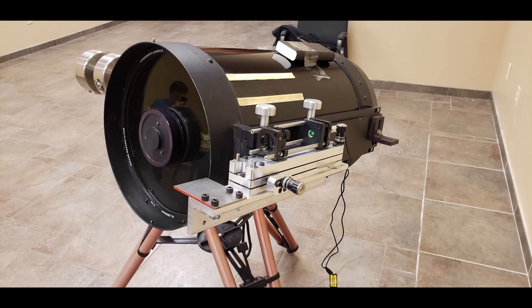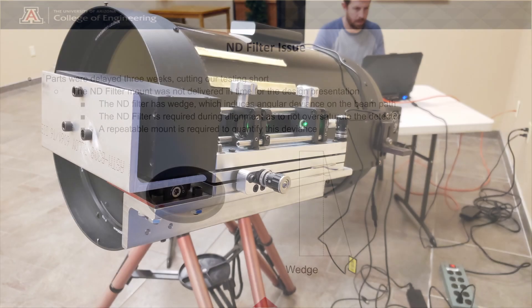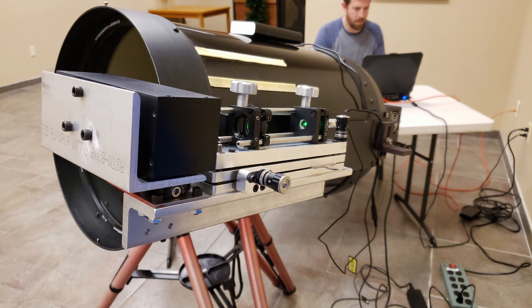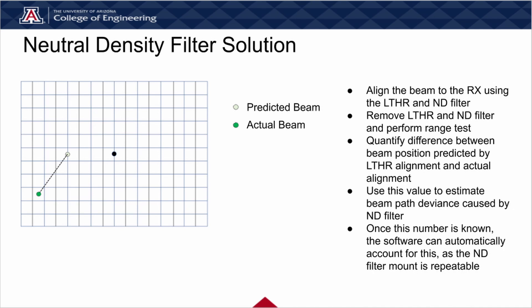Unfortunately, we were not able to complete the range test due to issues with the ND filter. Due to the nature of the ND filter being glass, it induces angular deviance on the beam path. In order to quantify this deviance, a repeatable mount for the ND filter would be required. Due to delays, we were not able to acquire such a mount. If a repeatable mount were available, the software could correct for the deviance caused by the ND filter, as it would be the same every time. To do this, we would align the beam to the RX using the LTHR and ND filter, remove the LTHR and ND filter, and perform a range test. We would quantify the difference between the beam position predicted by the LTHR alignment and the actual alignment, and use this value to estimate the beam path deviance caused by the ND filter.